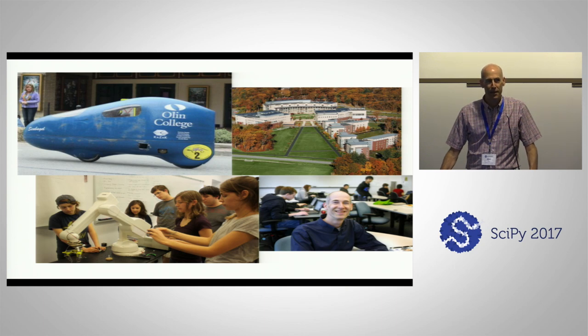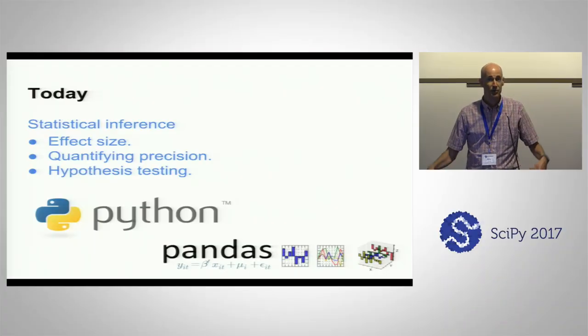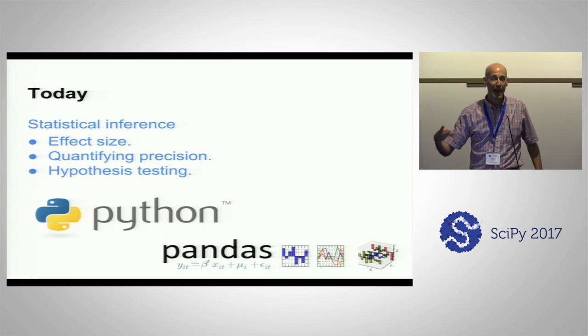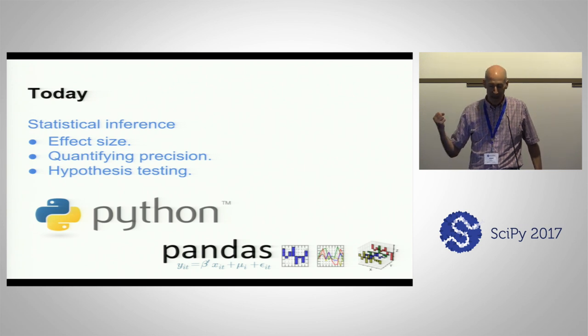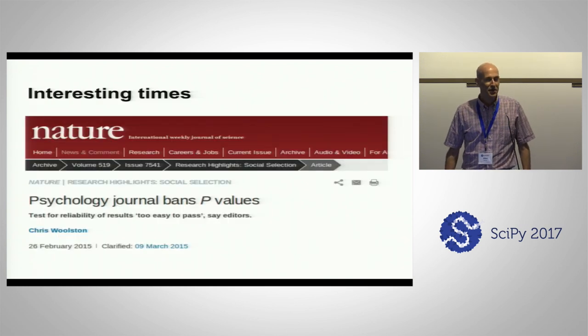I'm giving you a warning that I'm going to say some things that are nonstandard — things that kind of contradict conventional wisdom in statistics, but in a way that I think is better than conventional statistics. If you have questions, maybe toward the end I can talk about what I'm doing and why it's different from the norm. The primary topic today is statistical inference, which is working from a sample of a population and trying to estimate something about the world. We're going to talk about three big pieces: estimating the size of an effect, quantifying the precision of your estimate, and doing hypothesis testing.